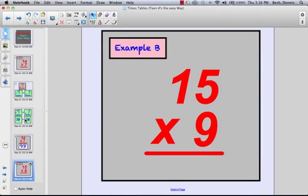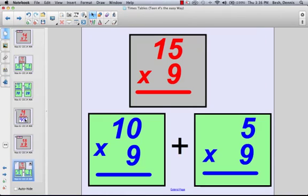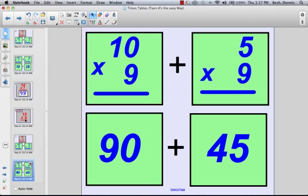A second example, 15 times 9, doing it the same way. Take the 15 and break it down into 10 and 5. This way I end up having 10 times 9, which makes 90, and 5 times 9, which makes 45.